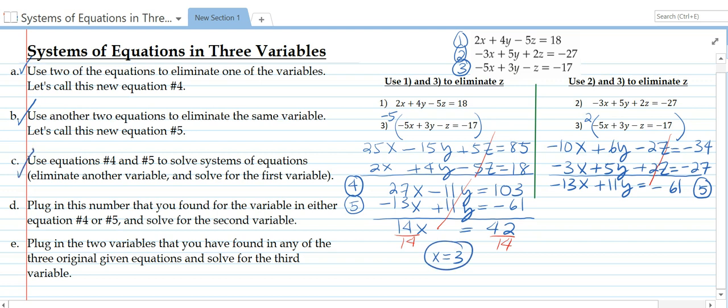Now we're going to plug in this x that we got into either number 5 or number 4, either one of them, to solve for y. We should get the same y regardless of which one we plug it into. I'm going to plug it into number 5 since it's right here. So negative 13 times 3 plus 11y equals negative 61. Negative 39 plus 11y equals negative 61.